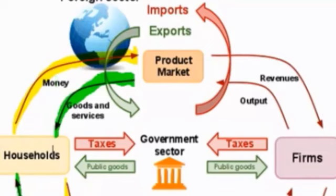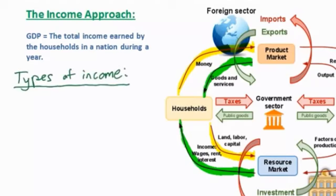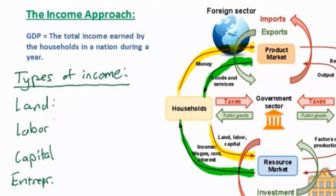Let's go into more detail about the income approach and find out how we can find the total income in a nation — therefore the total GDP — by breaking down the different types of income earned by households. By providing their productive resources to firms in the resource market, households can earn several different types of income. The different resources that households provide to firms are land, labor, capital, and entrepreneurship. For land, households receive rental income; the payment households receive for land is called rent. An example is a farmer who owns his own land yet rents it out to a corporation that farms wheat on his land, paying the landowner rental income for the permission to use his land.